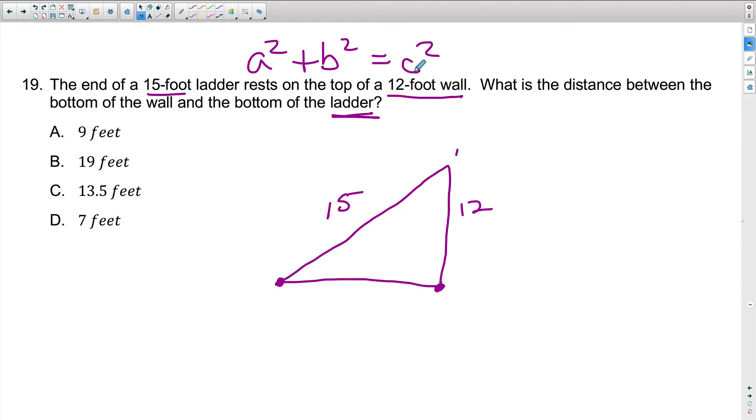Now, when we're thinking about a squared plus b squared equals c squared, we want to make sure that for c, we always use the hypotenuse. This is always c. Now, a and b, it doesn't matter. It can be either one of these legs, but the c has to be the hypotenuse, or the longest leg of the triangle.